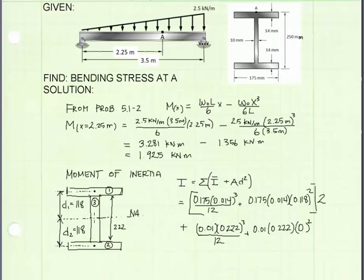That's because the centroid of rectangle three is at the same point as the neutral axis. So the distance from the neutral axis to the centroid is zero. So this term here is going to be zero.